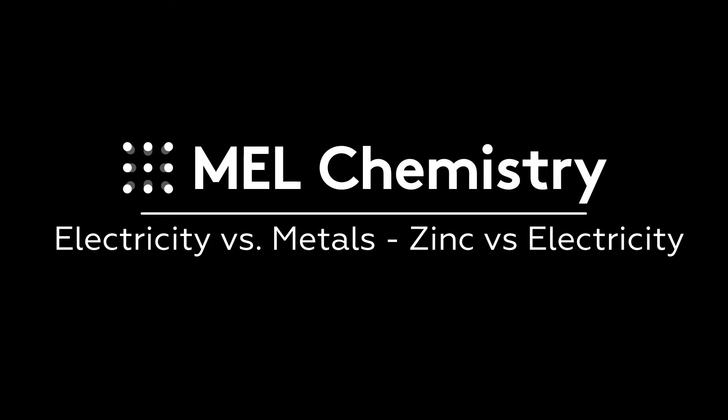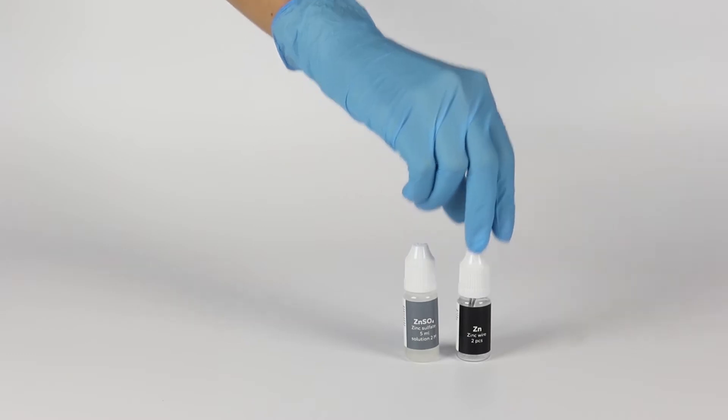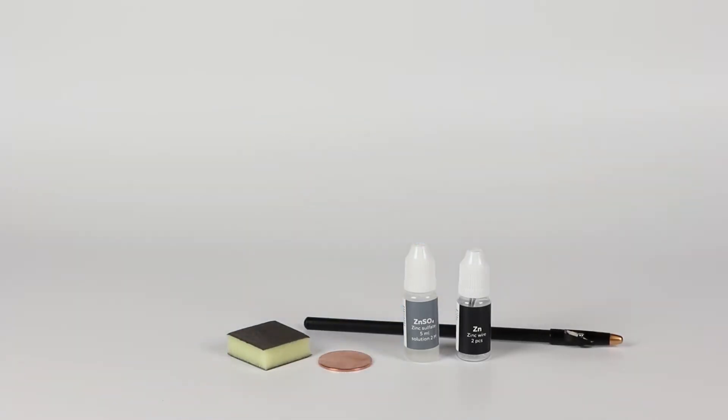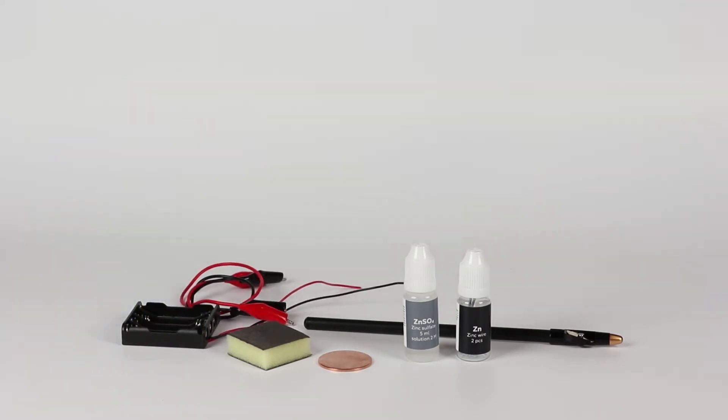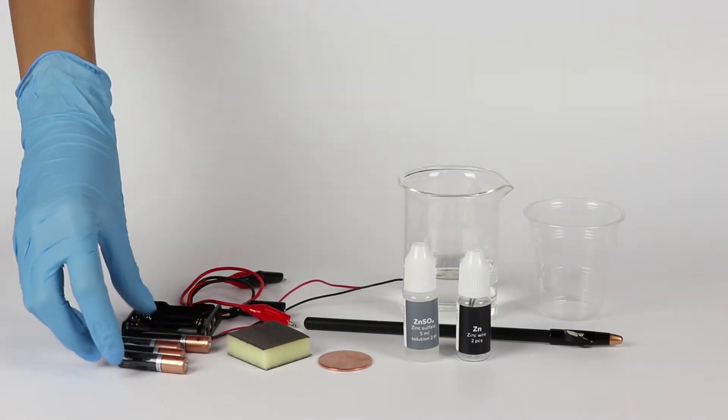For the zinc vs. Electricity experiment, you will need zinc sulfate solution, a zinc rod, a copper disc, an abrasive sponge, a black crayon, a battery holder, and crocodile clip wires. Also, prepare some water in the beaker, a disposable cup, four AAA batteries, and a napkin.